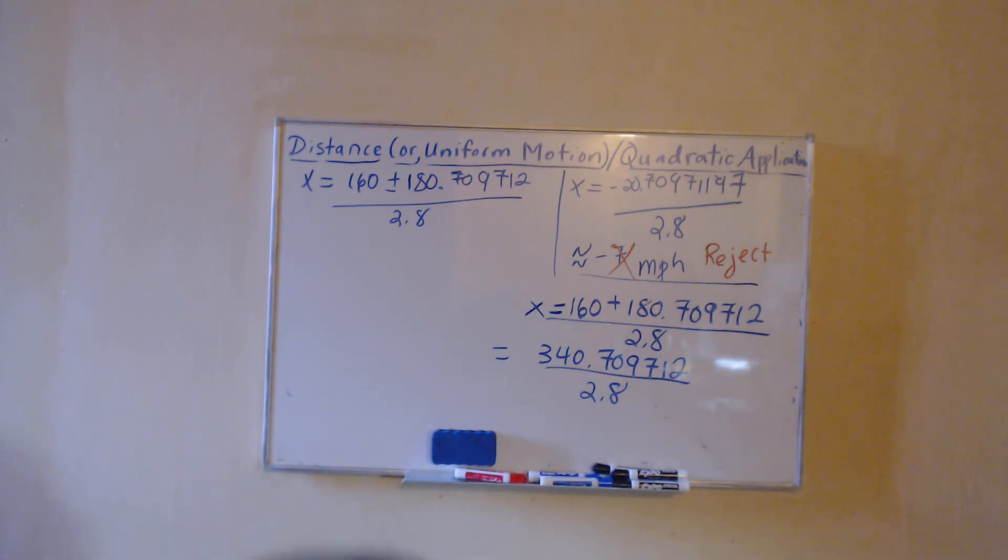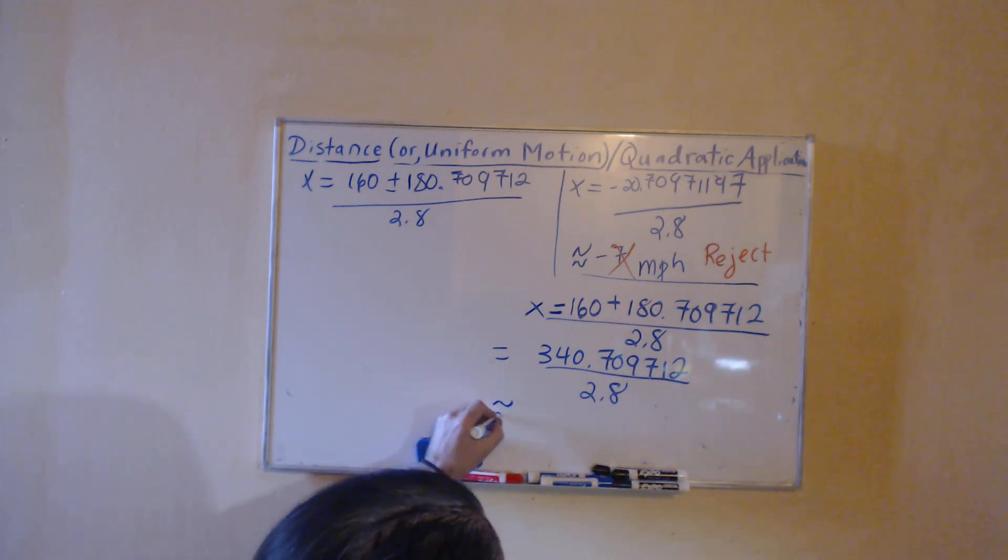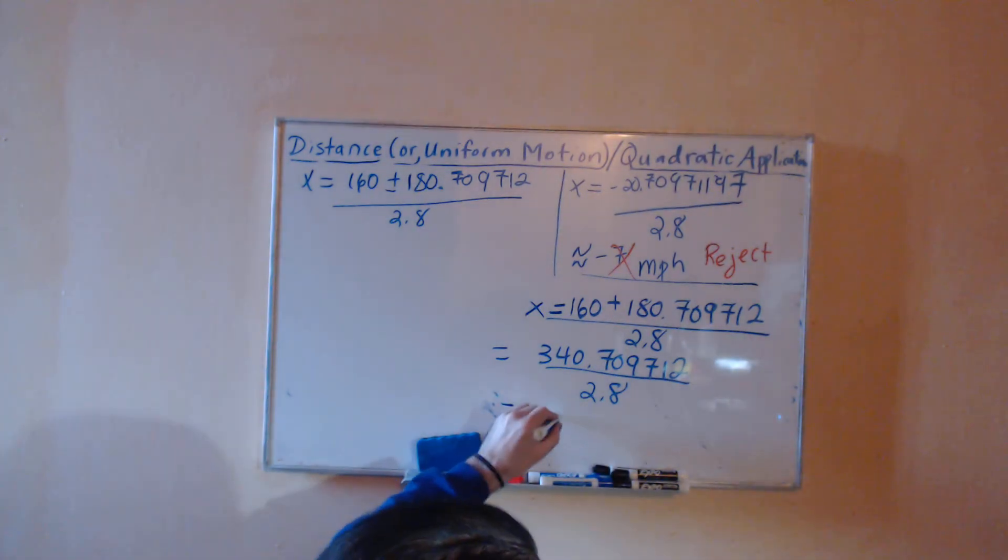The sooner you start rounding, different people rounding to different places, we could get all sorts of possible answers and we don't want that. So dividing the 340.709712 by 2.8, I'm coming up with 121.682004.